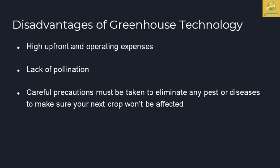There are also disadvantages of greenhouse technology. They involve high upfront and operational expenses, where the cost of initial investment is high and normal people may not be able to afford all the technologies. There is a lack of pollination because pollinators cannot enter the closed environment; this can be overcome by artificially introducing honeybees or placing honeybee combs, or using robotic drones. Careful precaution is needed to eliminate any pest or disease to ensure the next crop is not affected — if disease strikes, the entire affected area must be fully treated to prevent spread throughout the greenhouse.